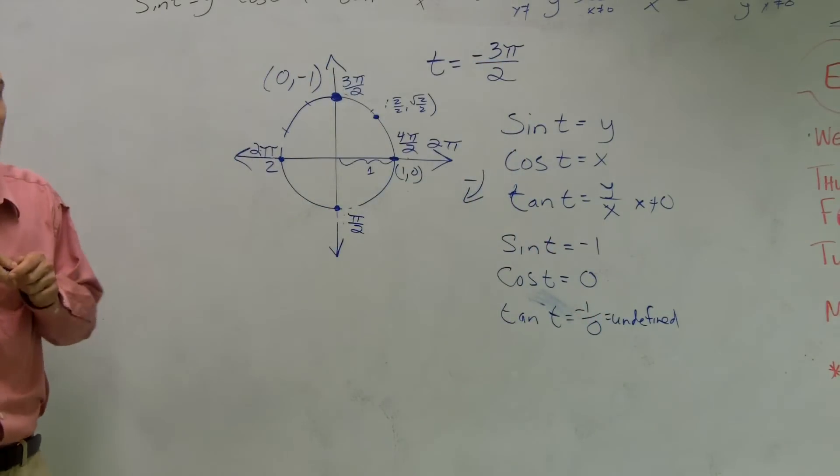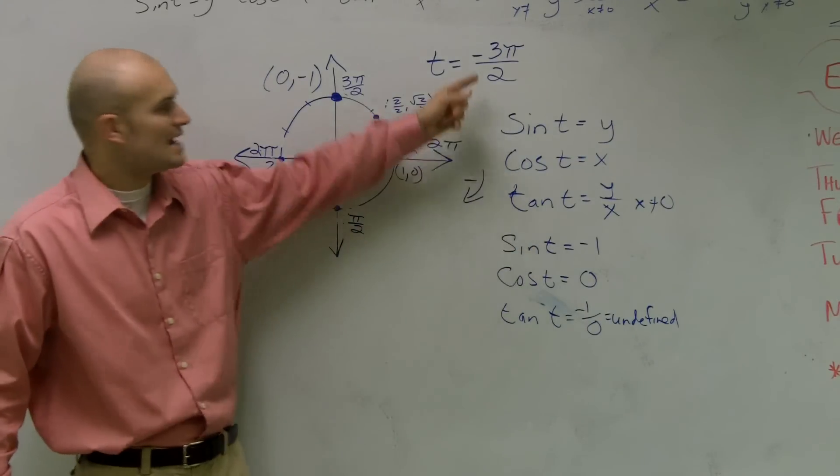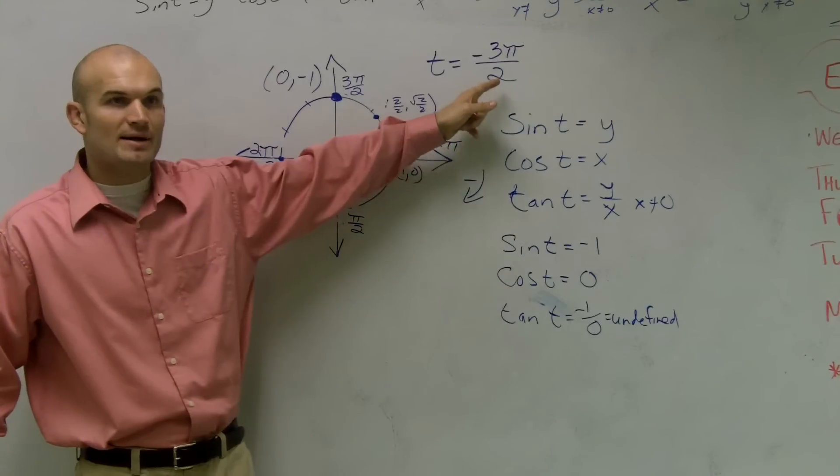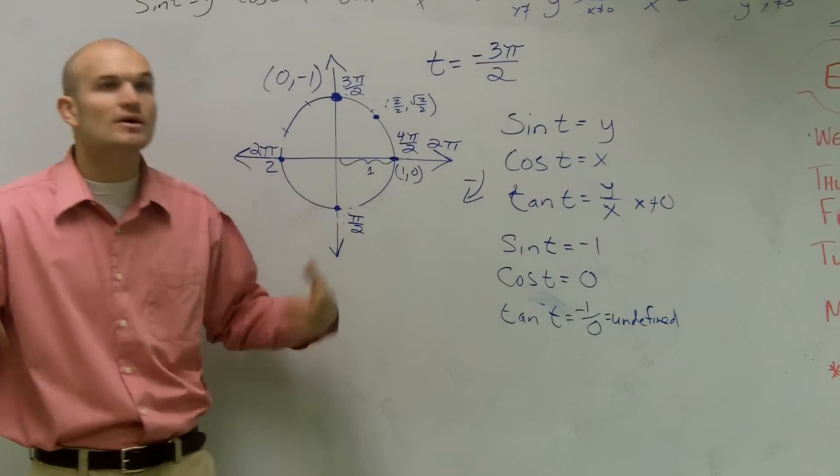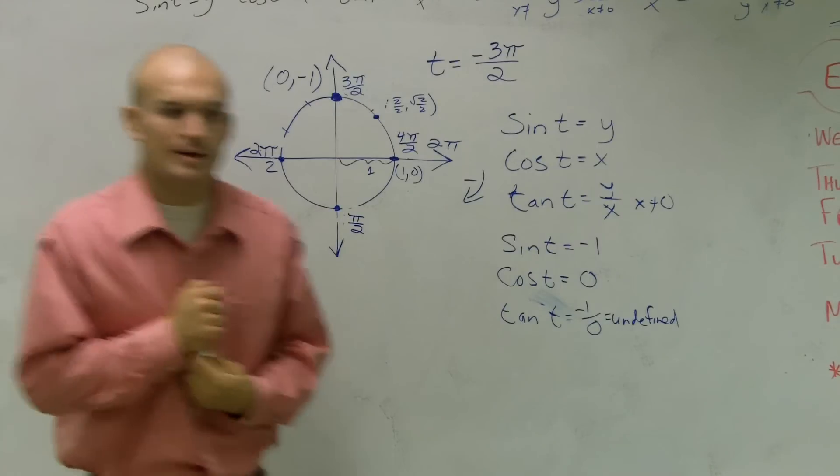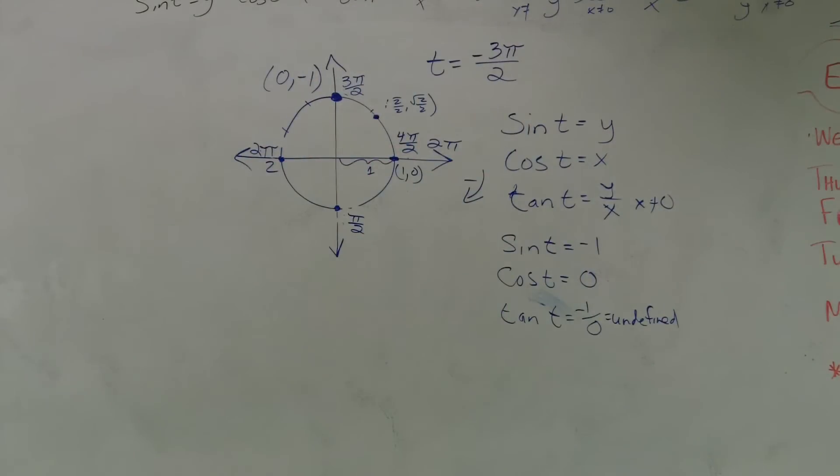And you guys can test these all in your calculator. If you type in sine of negative 3 pi divided by 2, you'll get negative 1. If you type in tangent of negative 3 pi over 2, you'll get undefined. Depends on the calculator.